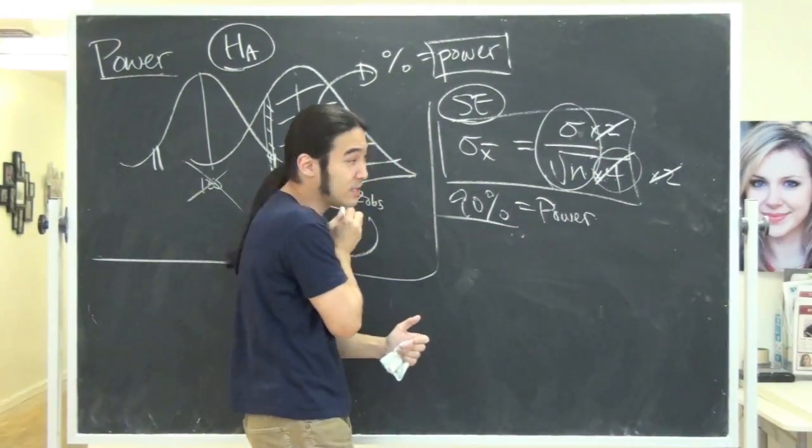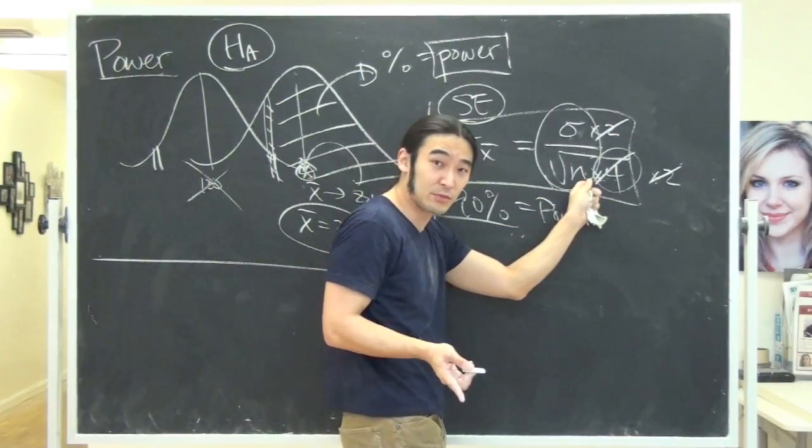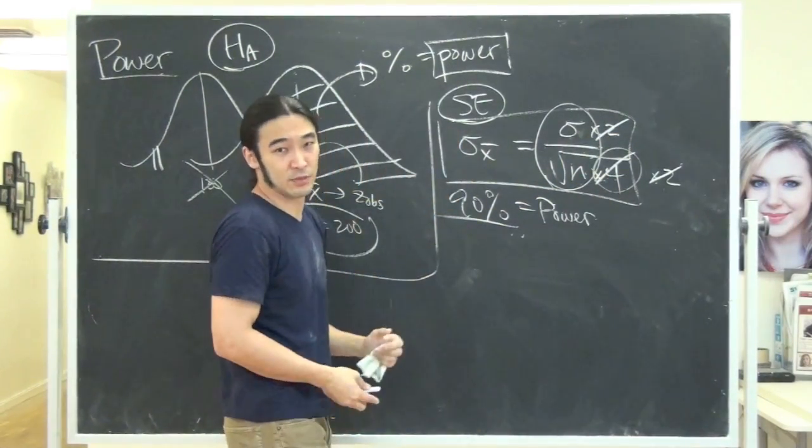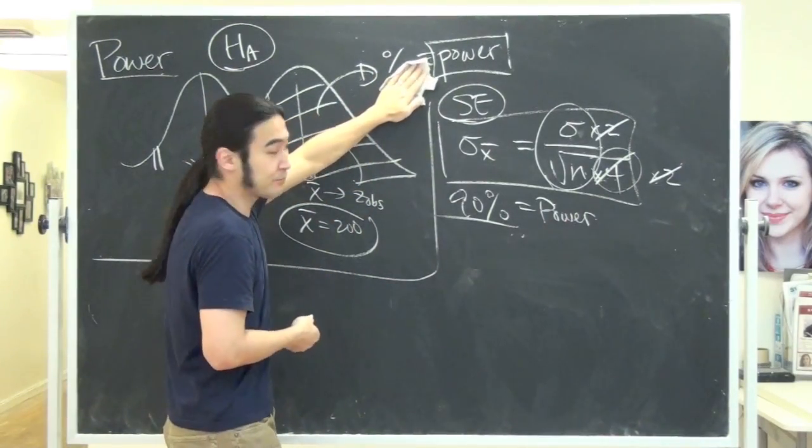So here the power remained unchanged. So if your power started at 90%, and you doubled the standard deviation of the population, but you quadrupled the sample size, the power would still be 90%. I think that's what you'd have to worry about first. That's the most important thing.